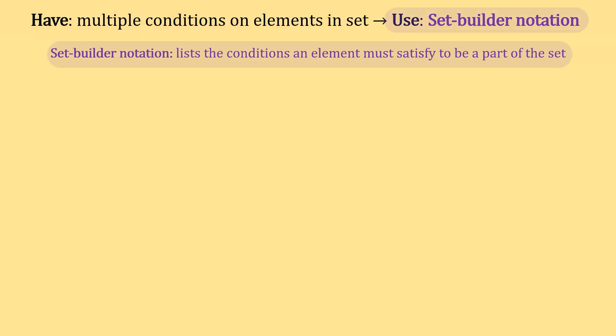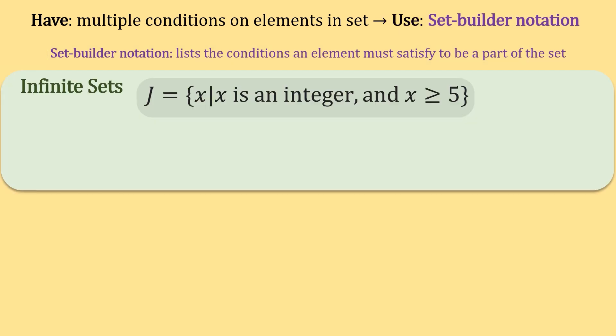Set builder notation lists the conditions that must be met for an element to be contained within the set. For example, this set J is in set builder notation. This vertical line stands for such that.